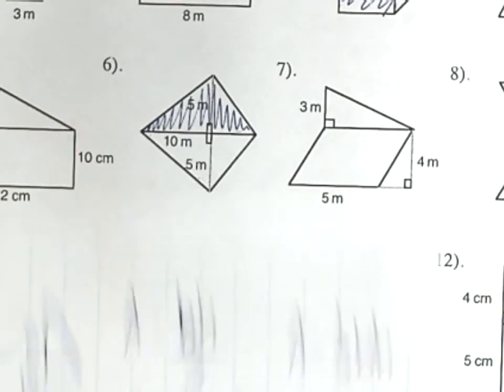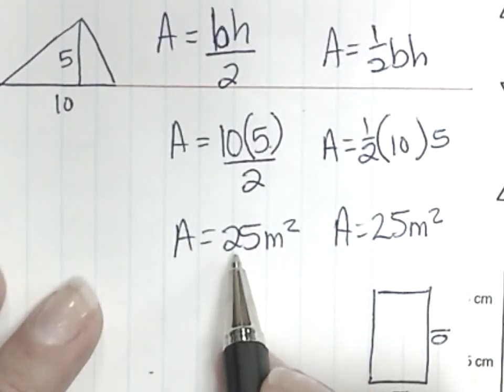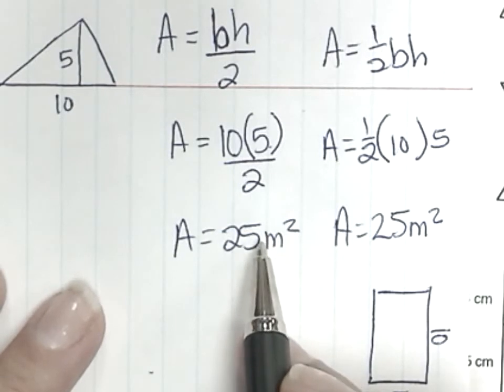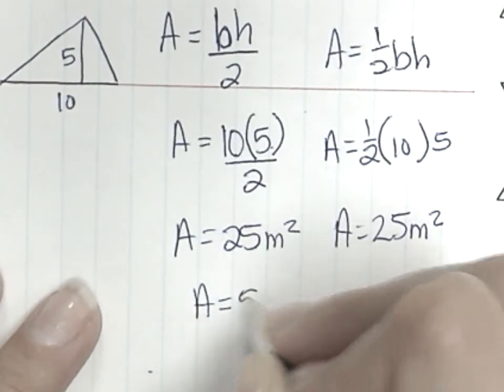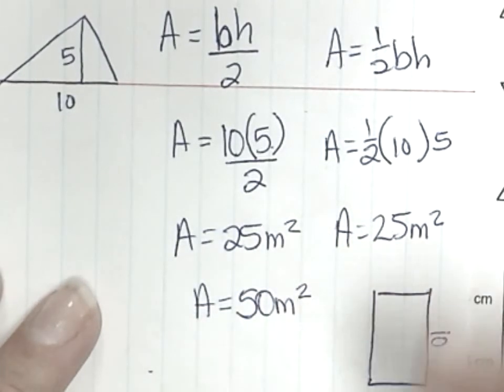So that means that I have two triangles that both have an area of twenty-five meters squared. Twenty-five plus twenty-five is? Fifty. So the total area is fifty meters squared.